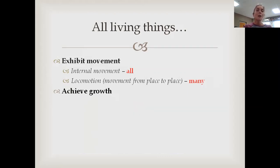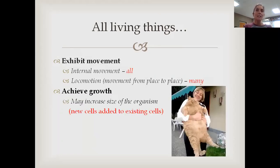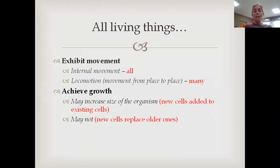All living things exhibit movement. All living things achieve growth, which just means that they grow. Growing can mean an increase in the size of the organism — like this big fat cat here, where new cells are added to existing cells. But we also call it growth when new cells replace older ones without an increase in organism size. So growth isn't just getting bigger; it could be growing new skin cells all the time.